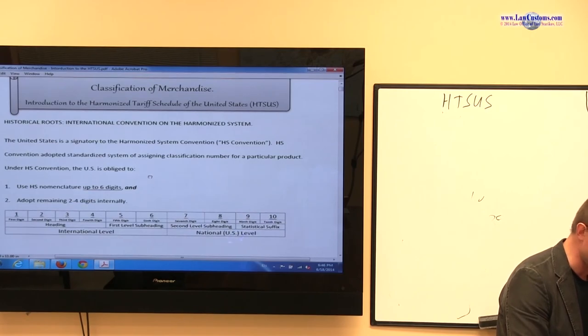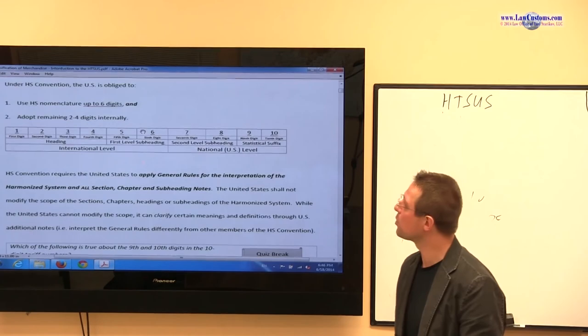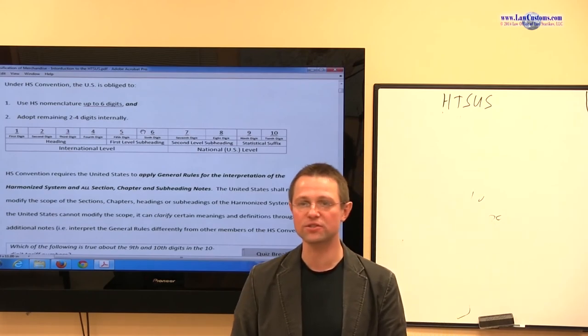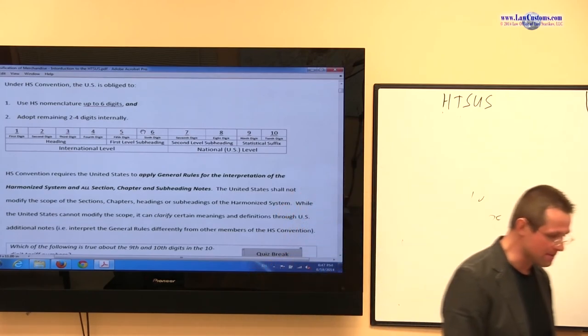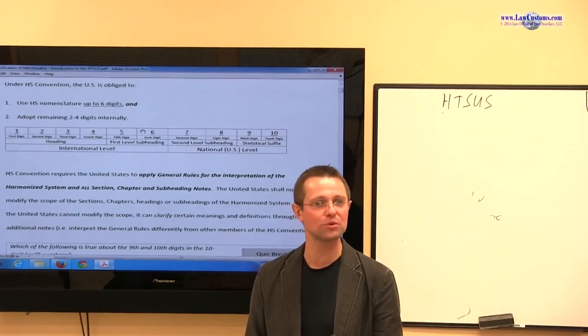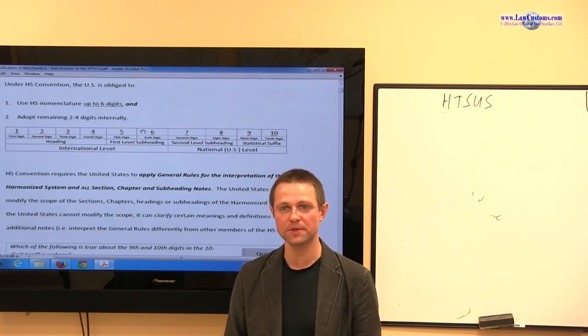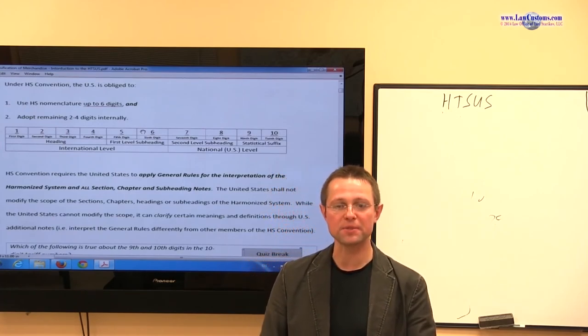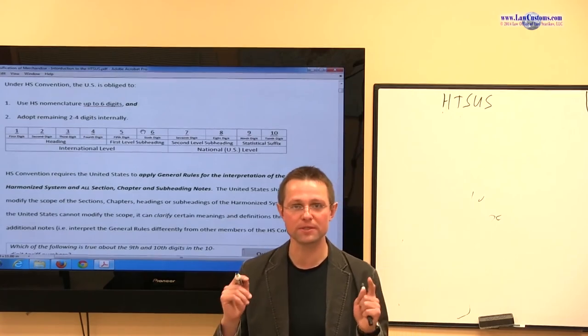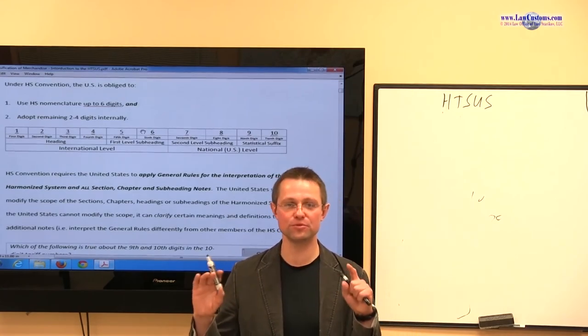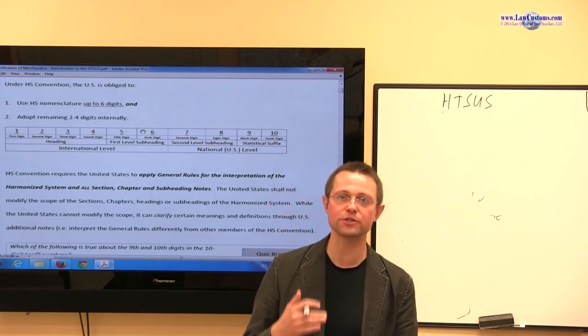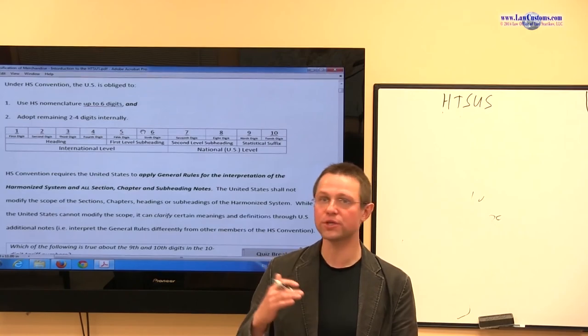Looking at the outline, we can see that the agreement was reached and most of the agreement at the international level was made at six digits, the six digit level. Because the HTSUS, Harmonized Tariff Schedule of United States, is made up of 10 digits. So every, almost every commodity, not every commodity as we shall later see, but almost every commodity can be slapped on with a label and that label has 10 digits.